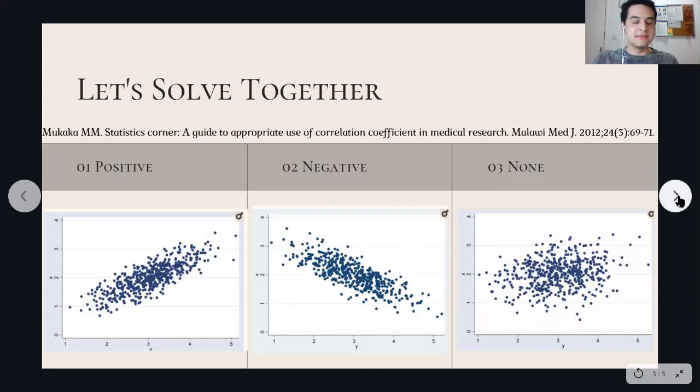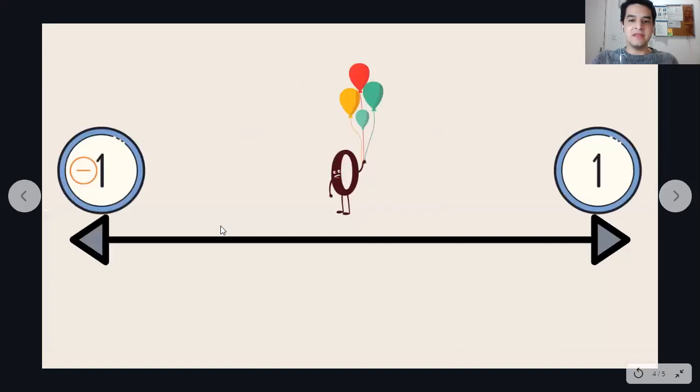One thing important to say is the minus one and positive one. In the middle, the zero. So the correlation will provide us the coefficient of correlation by the letter R, and the letter R will stay between these numbers, minus one and positive one.